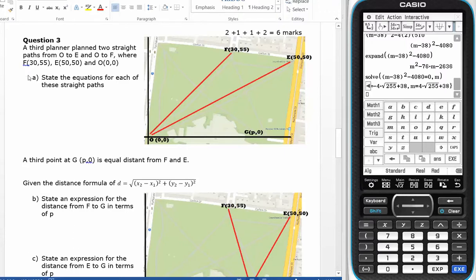In question number three, a third planner planned two straight paths from O to F and O to E. Set the equations into these straight paths. Well, both of these paths go through the origin, so the y-intercept is going to be zero.